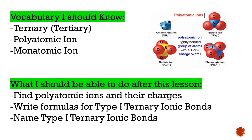Vocabulary you should know: ternary, tertiary — we'll talk about those — polyatomic ions, and monatomic ions. After this lesson, you should be able to find polyatomic ions and their charges, write the formulas for Type 1 and Type 2 ternary ionic bonds, and name Type 1 and Type 2 ternary ionic bonds. So let's talk about these.